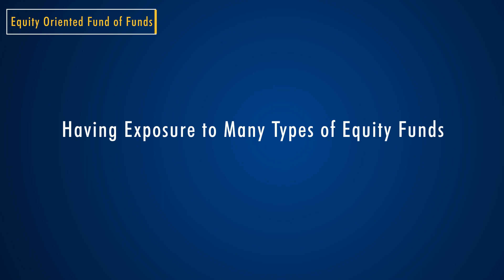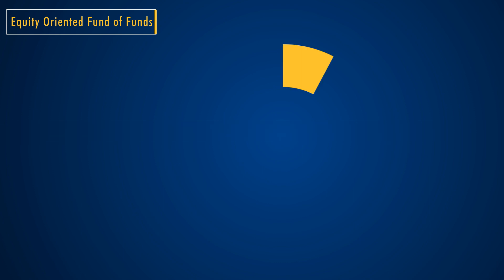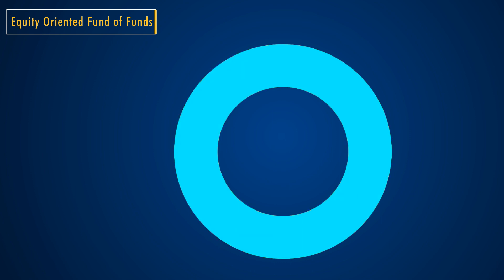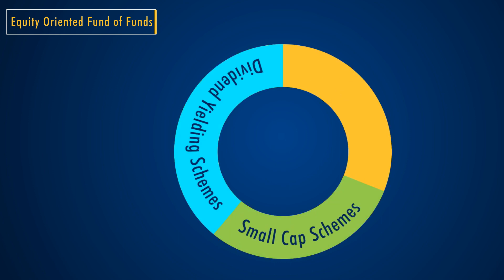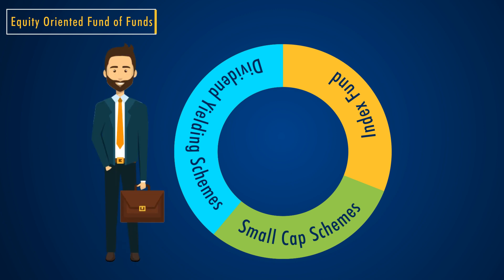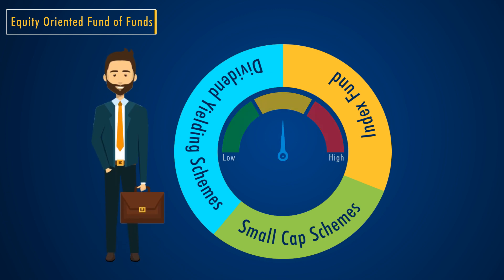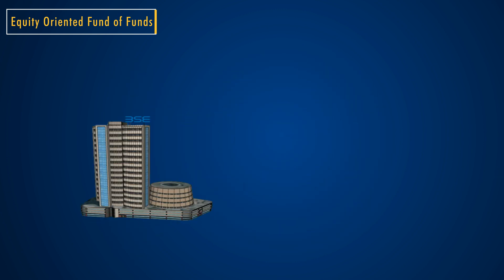For instance, your total investment corpus may be divided between small cap schemes, dividend yielding schemes, and an index fund. Such a diversification of your portfolio helps in minimizing your risks.